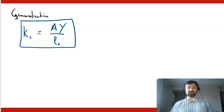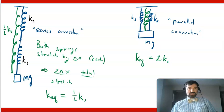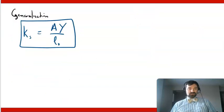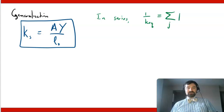The consequence of this, and this generalizes these two equations, is in series, one over the equivalent spring constant is equal to the sum of all of the reciprocals of the individual spring constants.